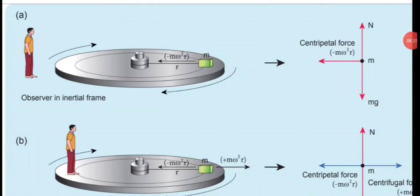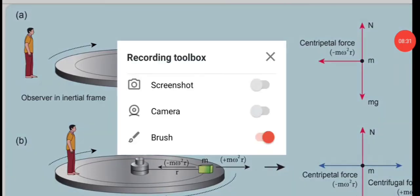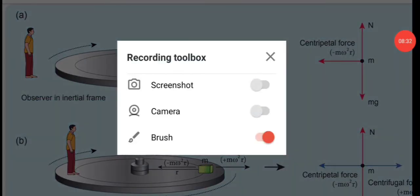Consider two observers: the first observer is in the inertial frame of reference.